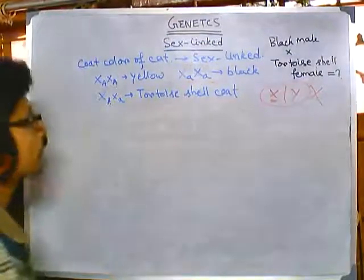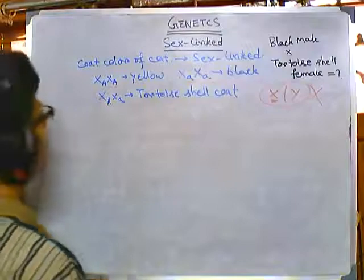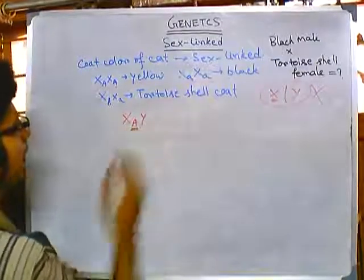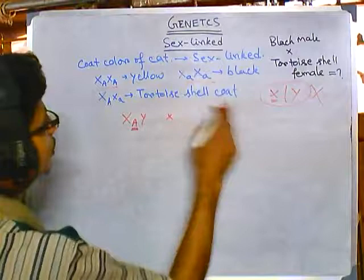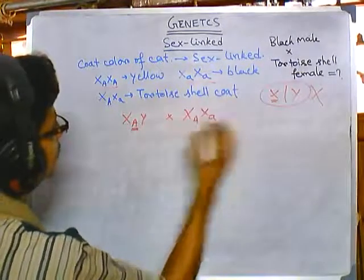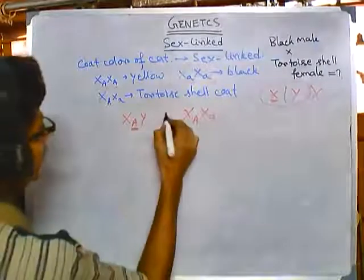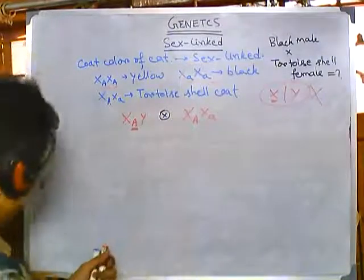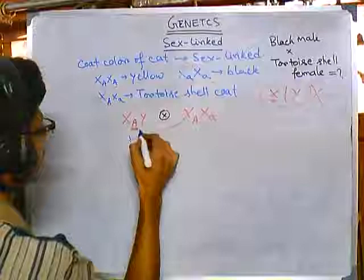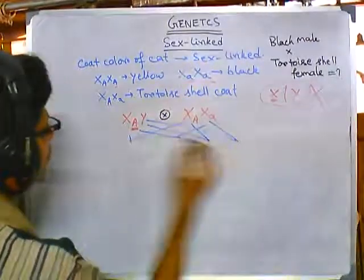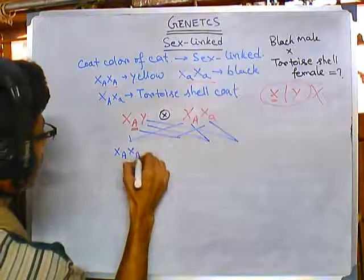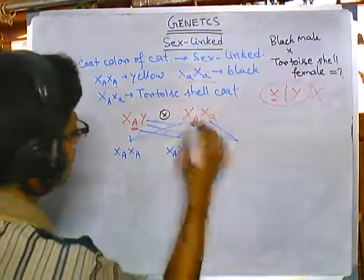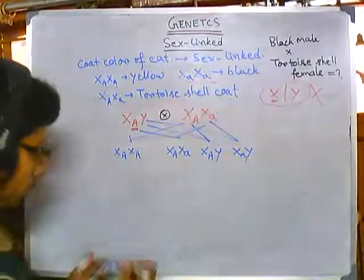A black male has genotype X-small-a Y, since small a gives black coat. This crosses with the tortoiseshell female, which is X-caps-A X-small-a. We write the cross in this way and produce the offspring by combining the X alleles from the female with either the X-small-a or Y from the male.